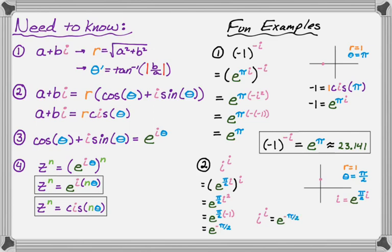So i to the i is e to the negative pi over two. And if you grab a calculator and punch it in, it will tell you that's approximately 0.208. So those are two kind of fun results that you get from this. I always think it's nice to just do interesting things once you learn this before you get into doing other types of problems. I hope you found this helpful and interesting and good luck.